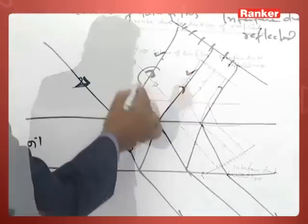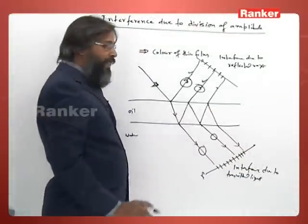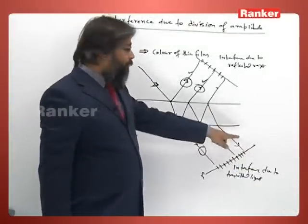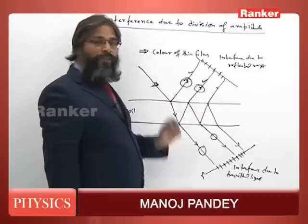Generally we take two reflections and here also two transmissions. Multiple transitions not required because the amplitudes of these are very small compared to first two reflections or first two transmissions.